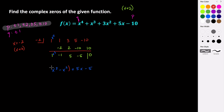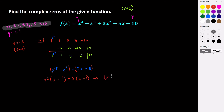We can factor this by grouping. Group the first two terms and the last two terms. The greatest common factor of x cubed and x squared is x squared, so factoring out x squared leaves x minus one. Then factor out a positive five from the second group, giving plus five times x minus one. So this factors to be x minus one times x squared plus five.